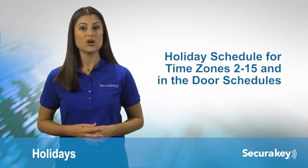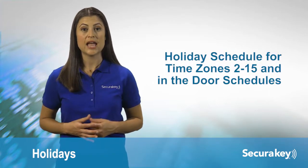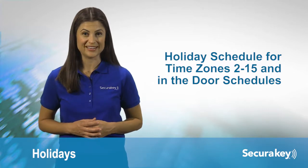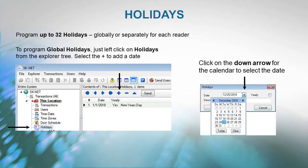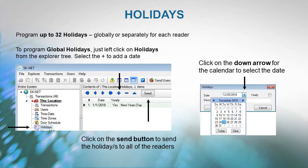Any date designated as a holiday will follow the holiday schedule for time zones 2 through 15 and in the door schedules you have created. Up to 32 holidays can be programmed, either globally or separately for each reader. To program global holidays, left-click on Holidays from the Explorer tree, select the Plus to add a date, click on the down arrow for the calendar to select the date, then click the Send button to send the holidays to all readers.